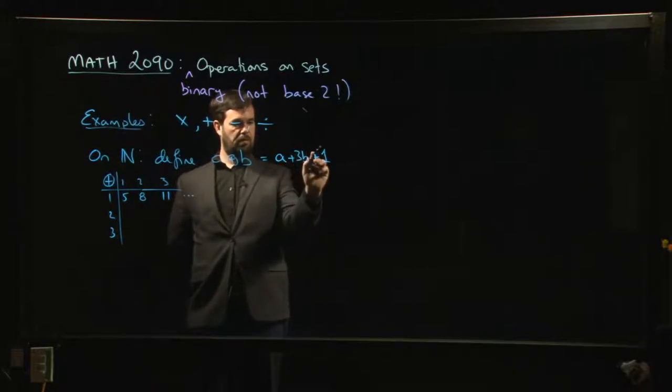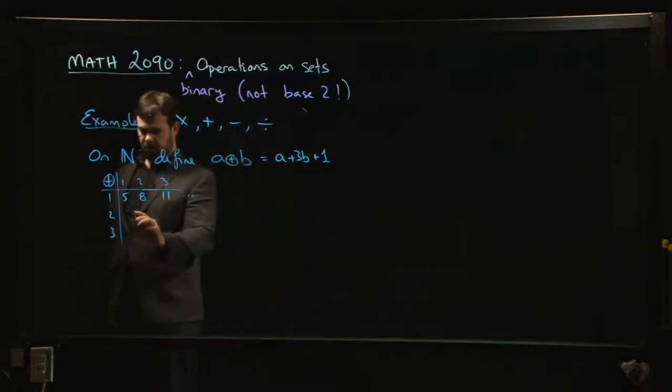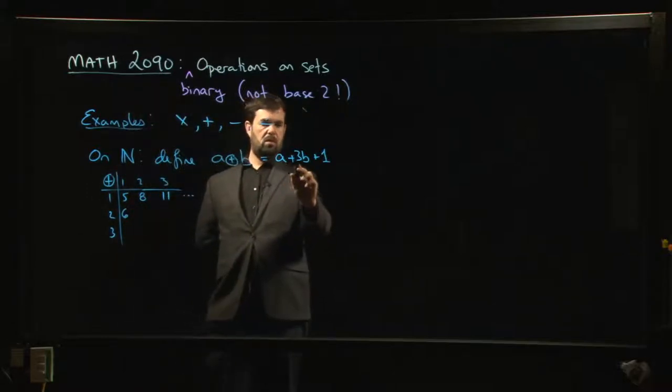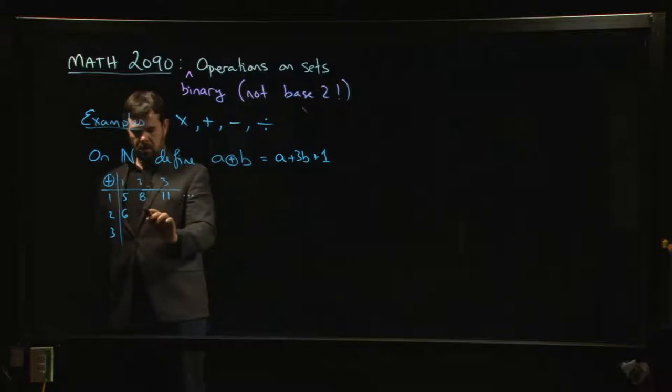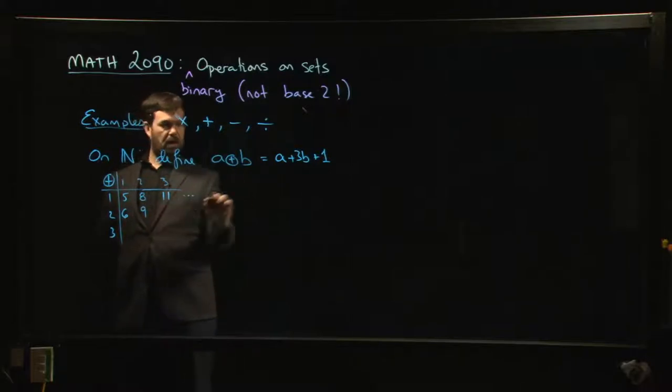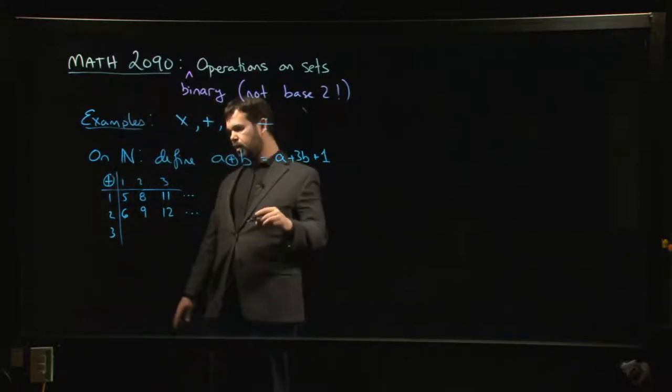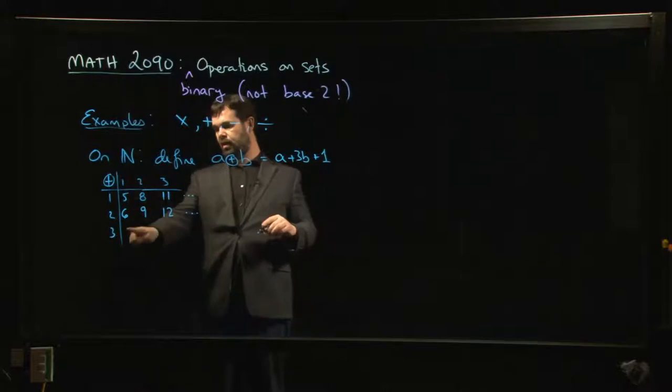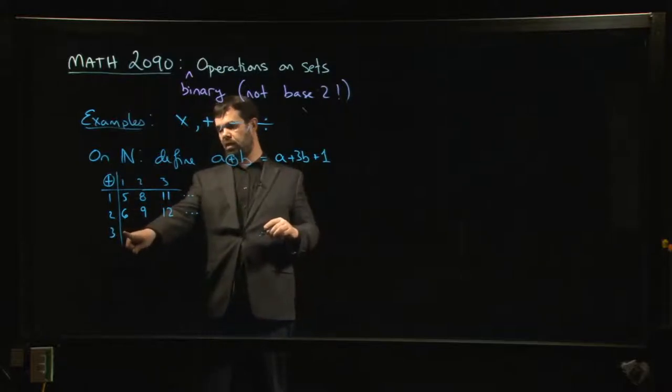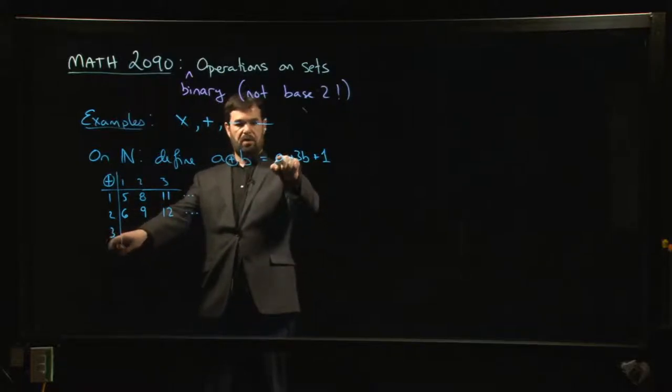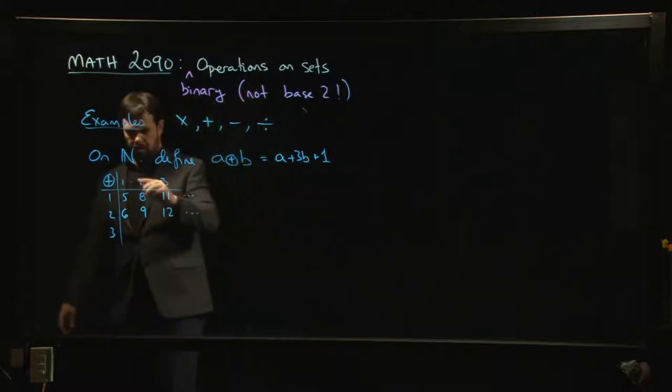All right, and then 2 ⊕ 2, so 3 times 2 is 6, so 2 + 6 is 8, plus 1 more is 9. And you can check the next one is going to be 12, and so on. And then we'll do it for 3. And actually, you can kind of see what's happening here—you can probably guess what this row is going to be, because now we're increasing this input by 1 each time, and that makes the sum go up by 1.